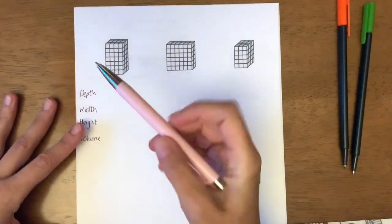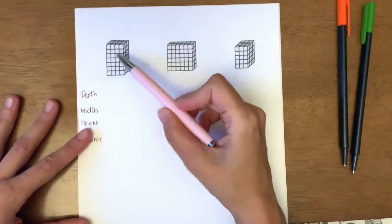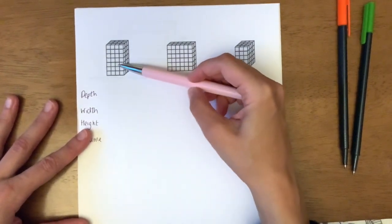The volume is a 3D shape, and it's the space that fills the 3D shape. So what we could do here is we could imagine this was fully built and we would count up the squares that are there.